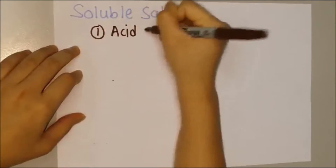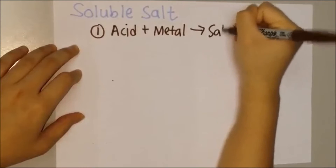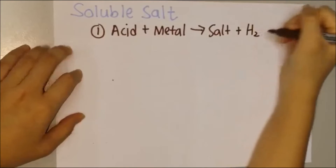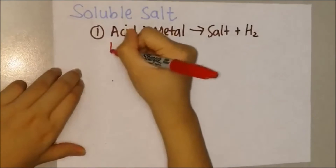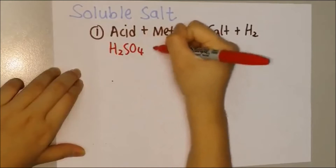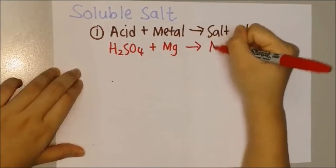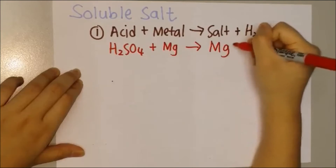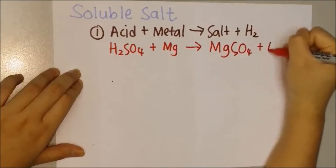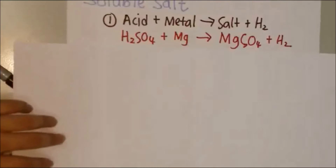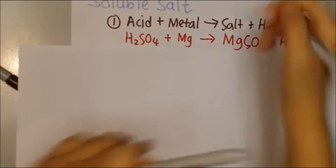Acids react with metal to form salts and hydrogen gas. For example, sulfuric acid reacts with magnesium to produce magnesium sulfate and hydrogen gas. This method is known as a displacement reaction.